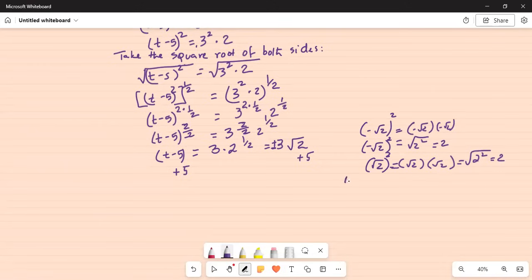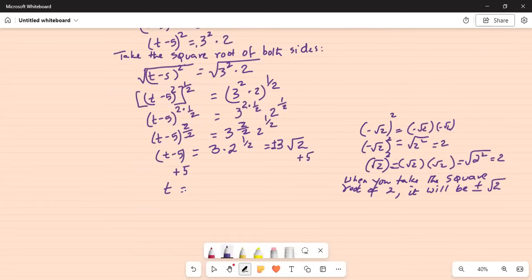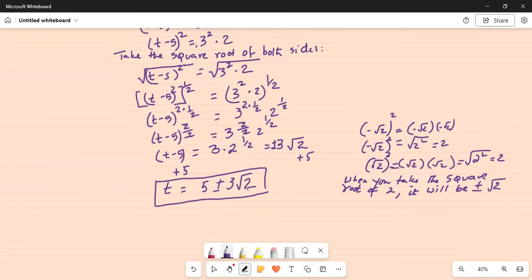when you take the square root of 2, it will be plus minus square root of 2. Okay, so we have t, because minus 5 cancels with plus 5, is equal to 5 plus minus 3 square root of 2. And the reason for the plus minus is because 2 by itself can be written as square root of 2 square or square root of minus square root of 2 square, as I explained here.